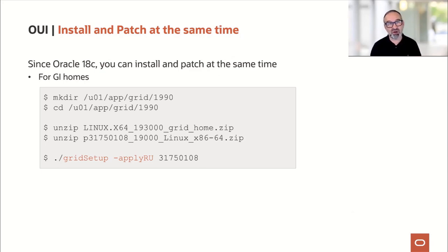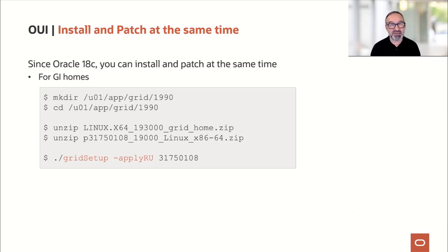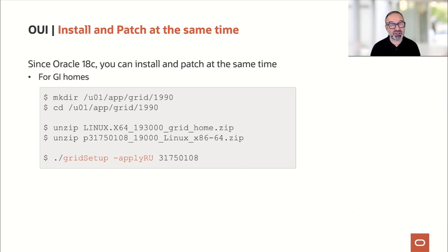What we see on the slide here is the grid infrastructure installation where this works as well. We create the directory — I name it here grid 9.0 — and change into that directory. I unzip the base release, which is 19.3.0 grid infrastructure. And then in the same directory, I unzip also the most recent release update. I start the installation with gridSetup, passing the -applyRU parameter and the directory name of the subdirectory where I unzipped the patch.